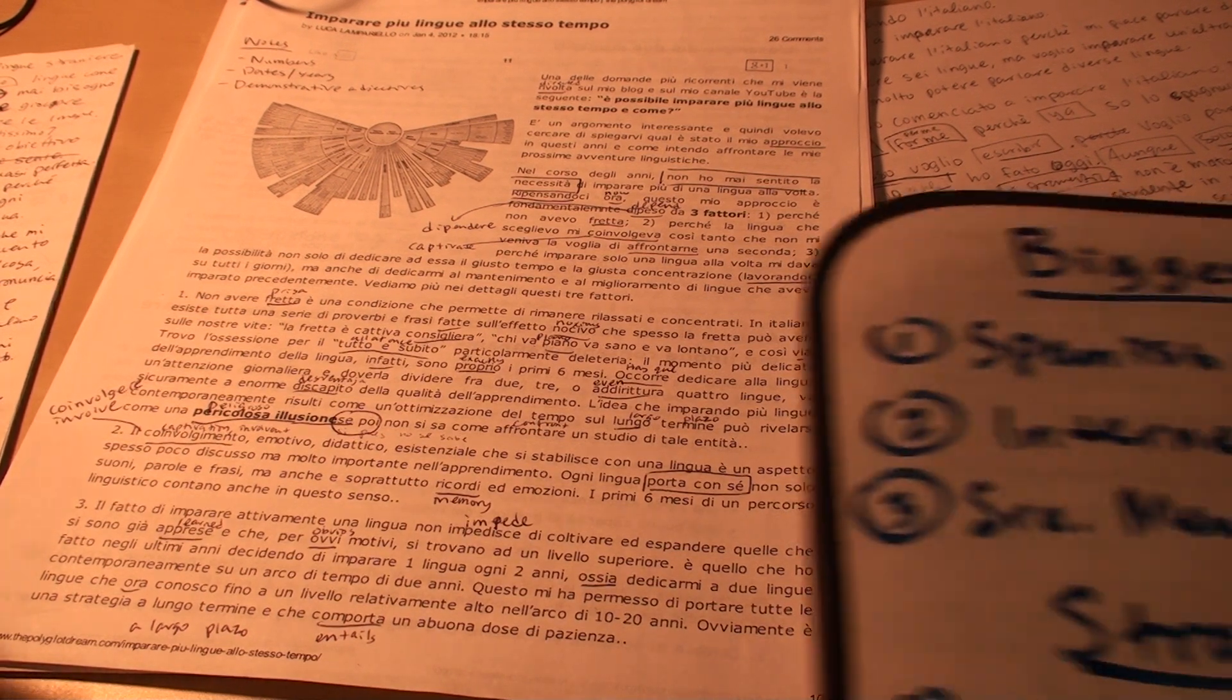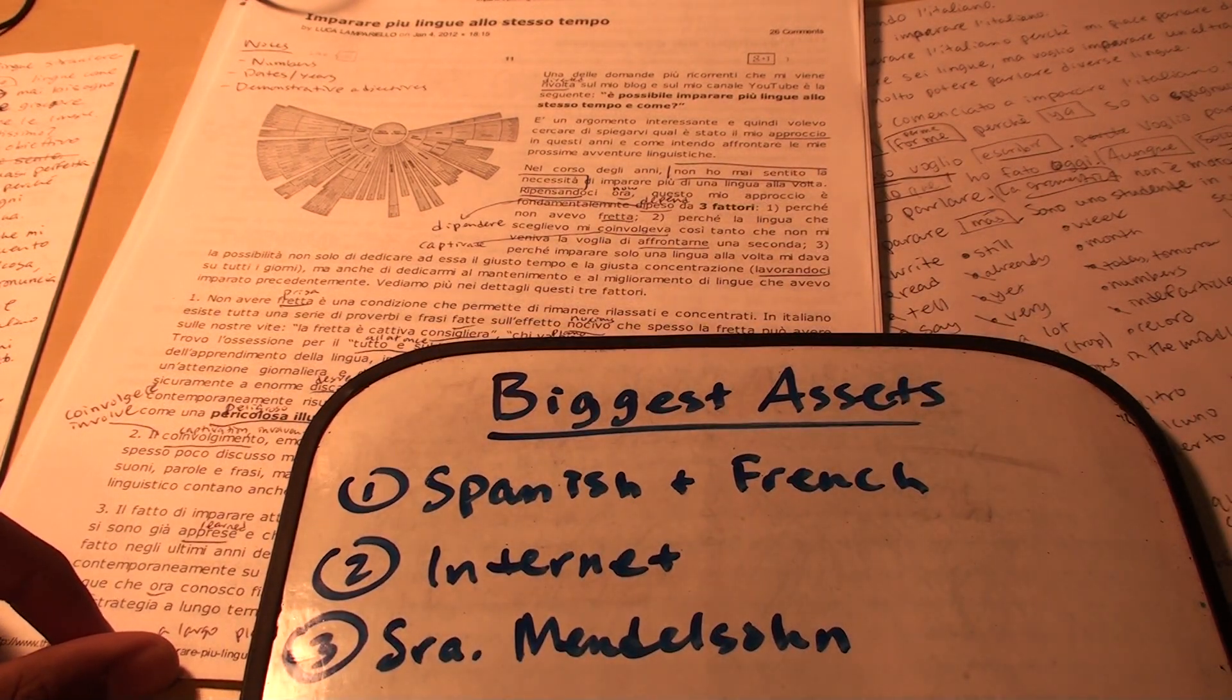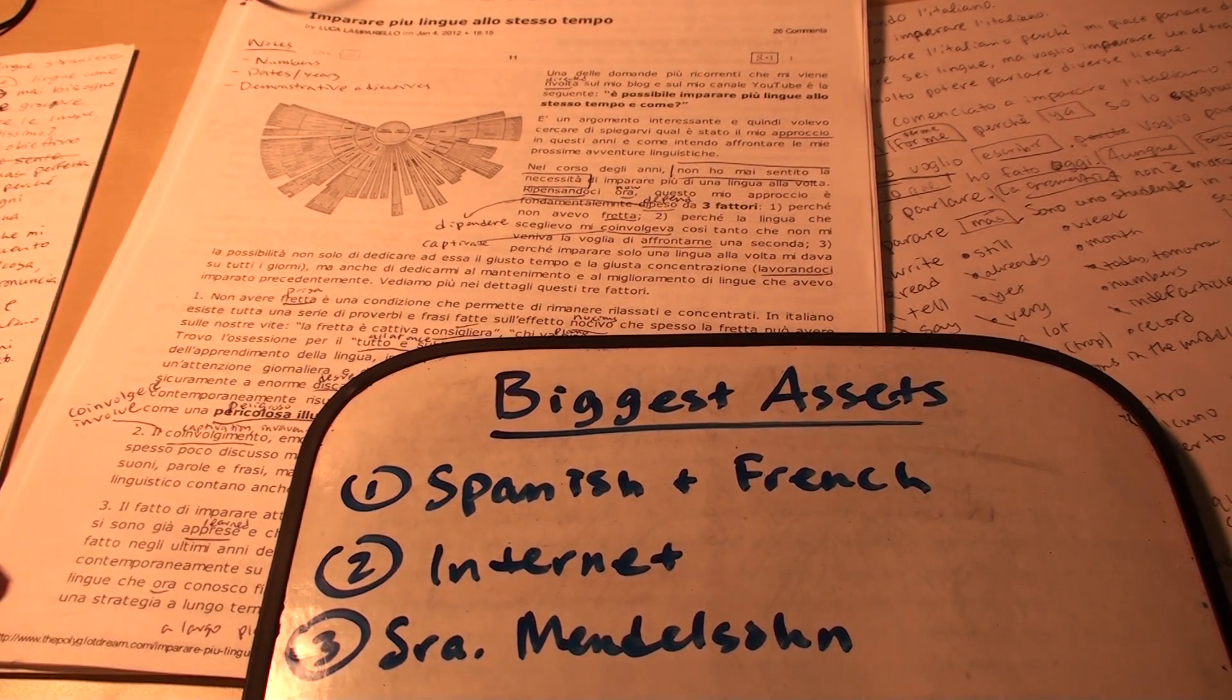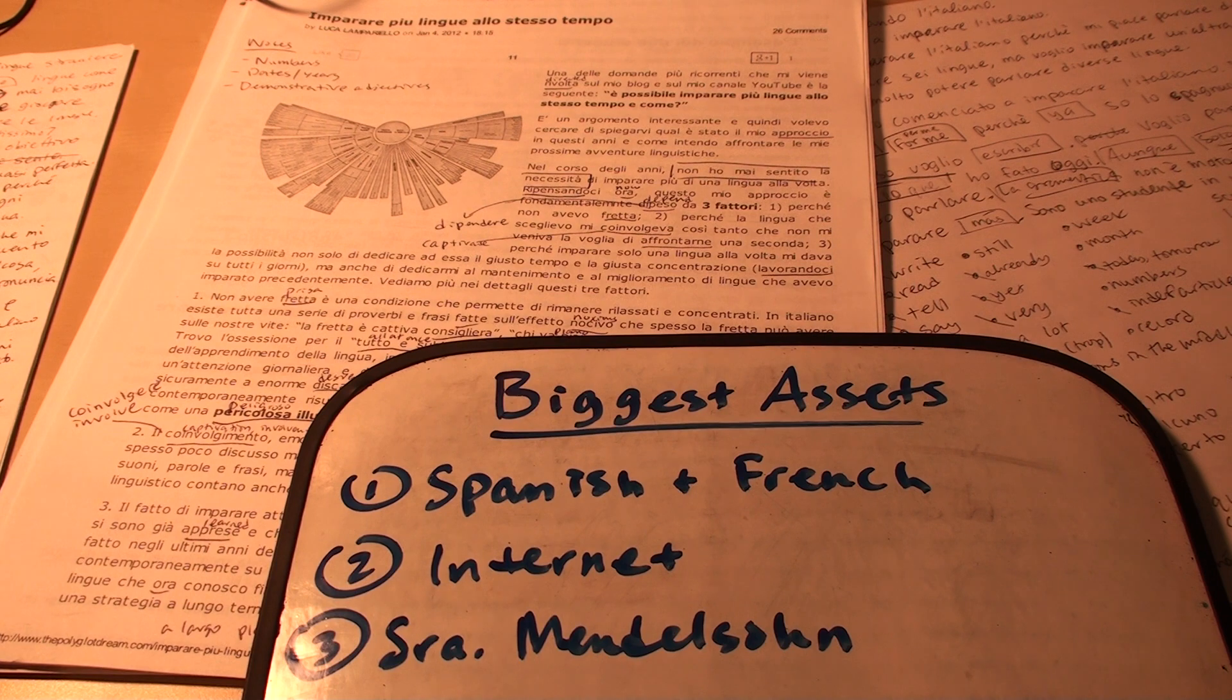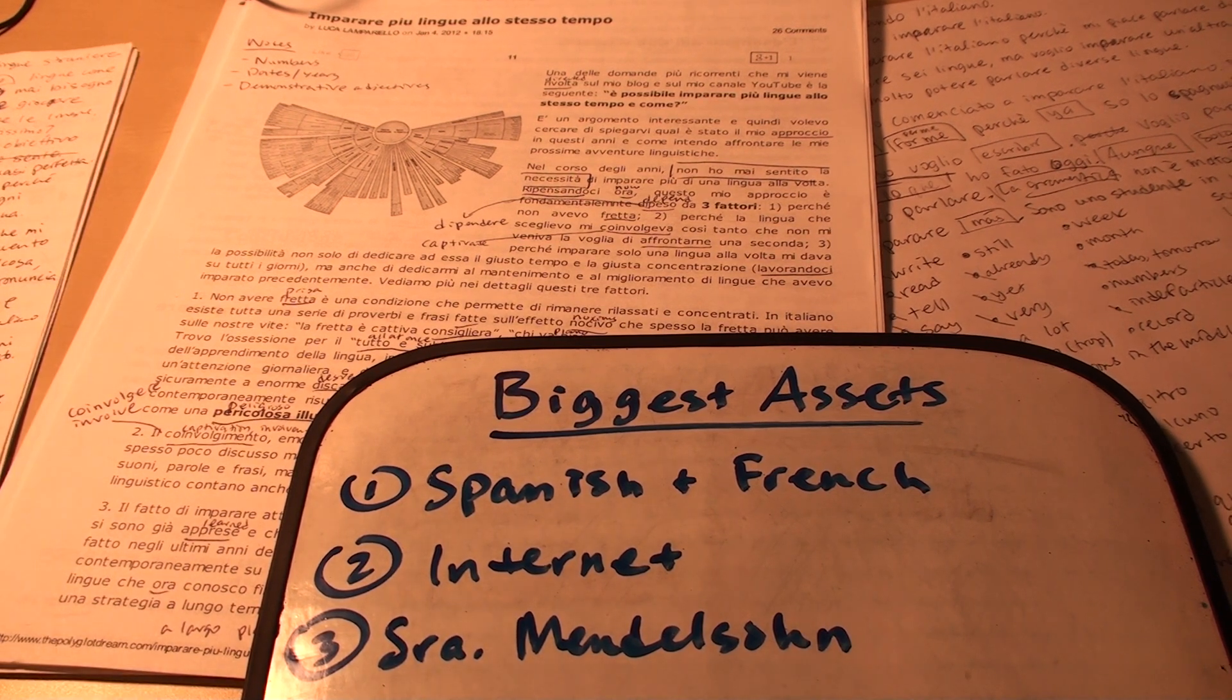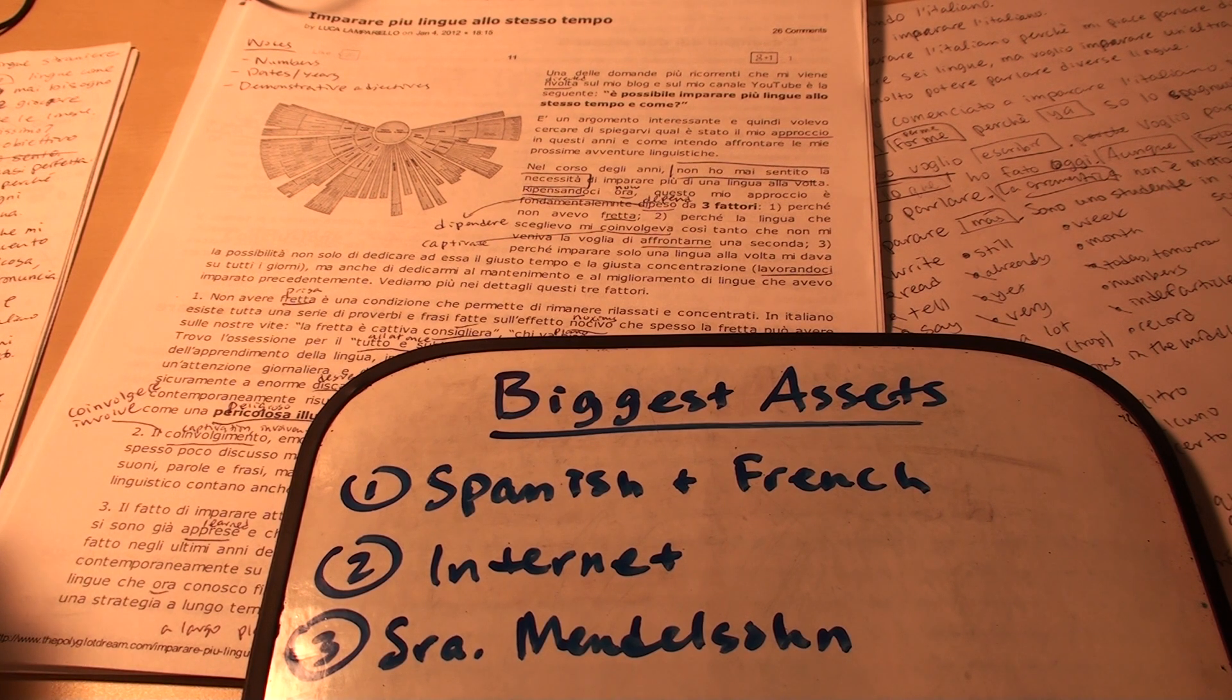So first, let me start off by telling you my biggest assets. These are in order of importance. My biggest asset was Spanish and French. I already have a knowledge of these two languages to a pretty advanced degree. So what I've learned from my experience is that Italian is really pretty much a combination of Spanish and French. There are so many aspects of these two languages that are almost the same with Italian.